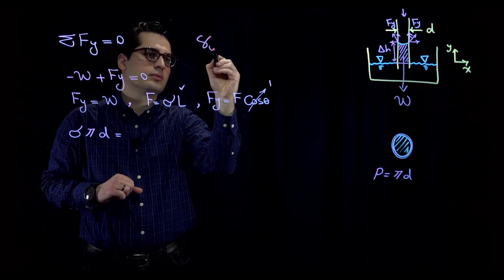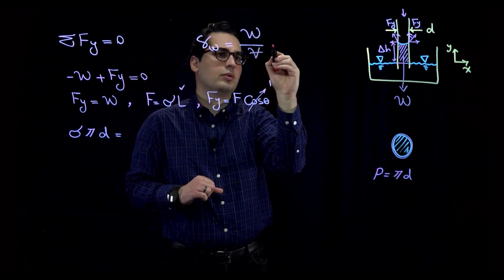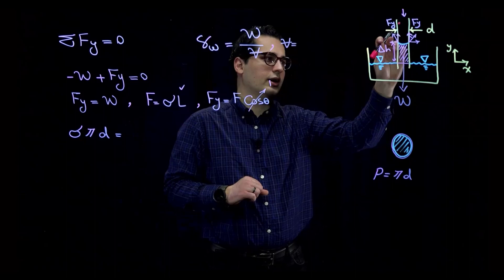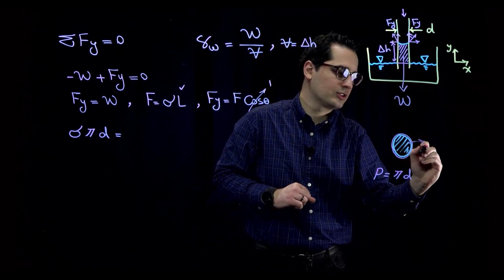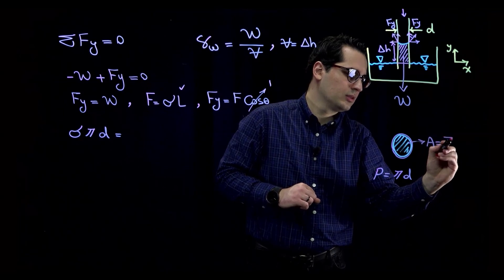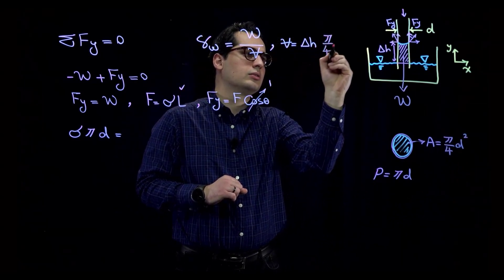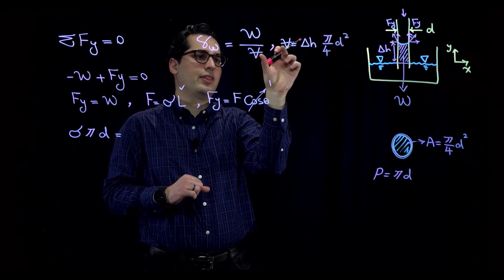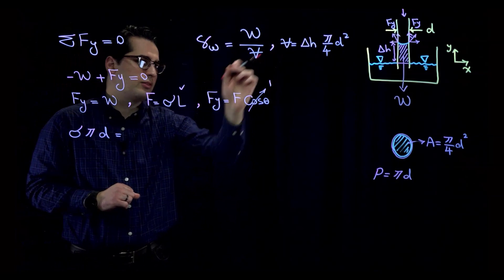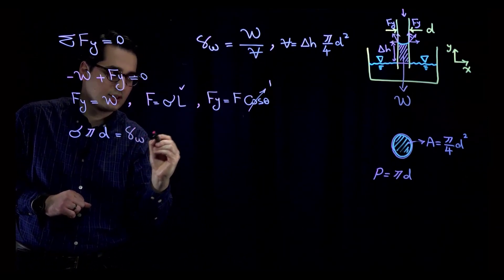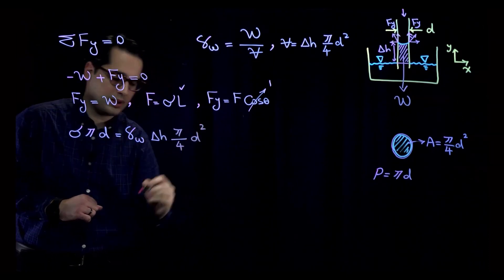And W is the weight of this cylinder, which is filled with water. And I know that weight, according to specific weight, is going to be weight divided by volume. What is the volume of that cylinder? The volume of cylinder is the cross-sectional area times delta H. So it would be delta H times cross-sectional area of the cylinder, which would be pi divided by 4 times diameter to the power 2. Now I have this. I can write down the value of W, which is gamma_W, specific weight, times volume.